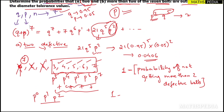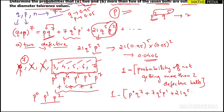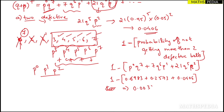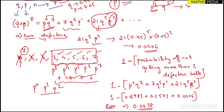In the expansion, p^0 term is q^7, and we also add the p^1 and p^2 terms. So the calculation is: 1 − [q^7 + 7q^6·p + 21q^5·p^2]. Putting in the values of p = 0.05 and q = 0.95: 1 − [0.6983 + 0.2573 + 0.0406] = 0.008. So you have got the answer using both methods.